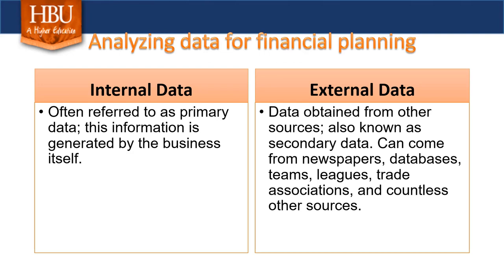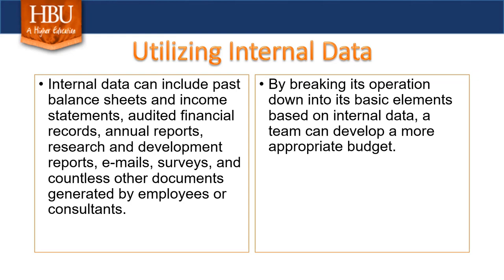When budgeting and planning, sources of data come from two areas: internal and external. Internal data is that which is generated by the company itself. This includes accounting sheets such as balance sheets, income statements, audits, and financial analyses. This allows the business to break down its operations into basic elements in order to have the key information needed to create an appropriate budget.